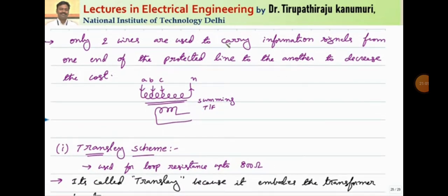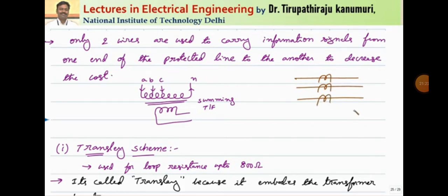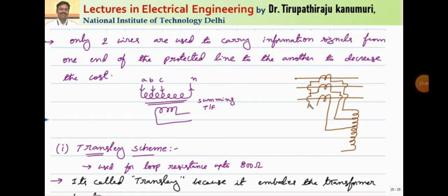Only two wires are used to carry the complete three-phase information. For this, we use a summing transformer. The secondaries of the CTs are connected to the primary of the summing transformer. For a three-phase line with phases A, B, and C, the currents Ia, Ib, and Ic enter the primary. The net sum of these currents introduces the flux, and this flux links with the secondary to induce EMF in the secondary side. The current that passes through the neutral channel is equal to Ia plus Ib plus Ic.